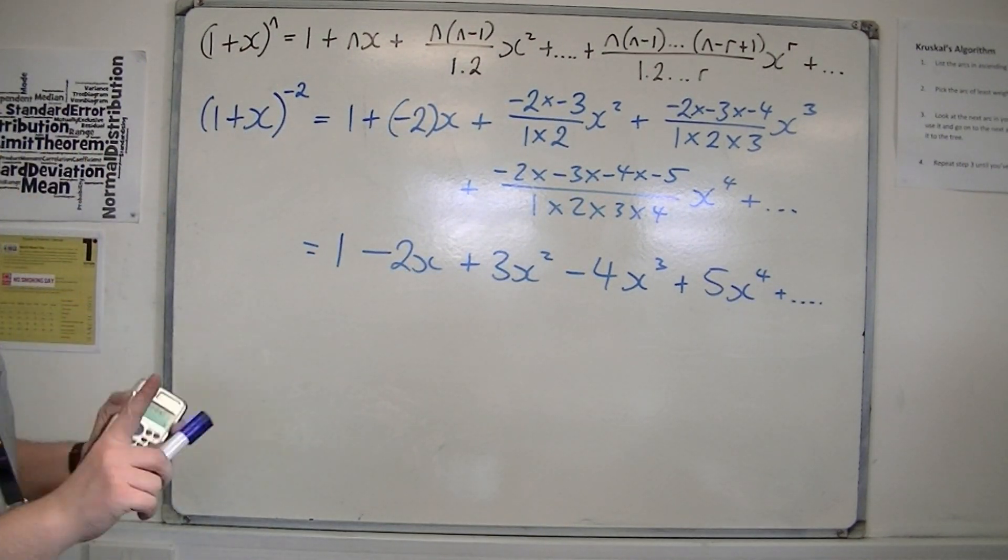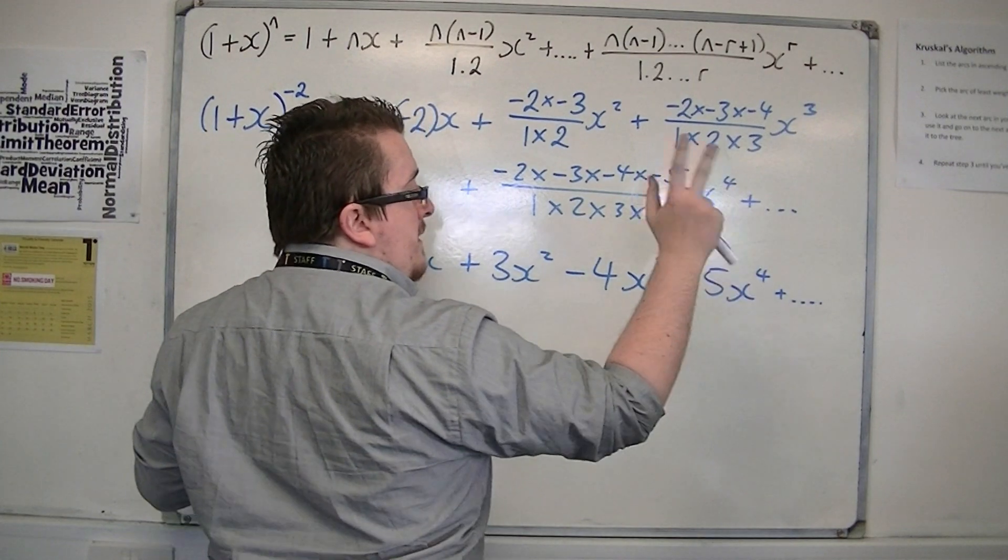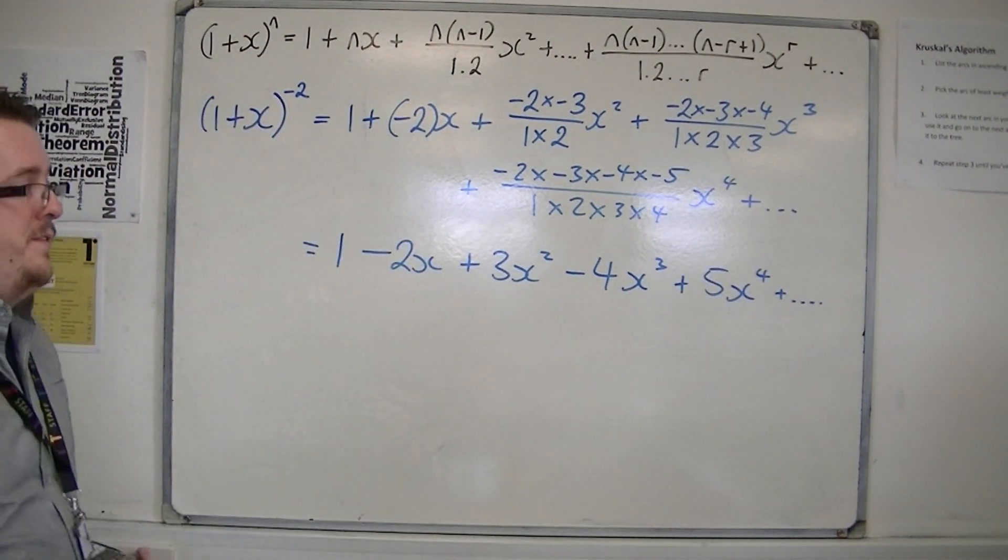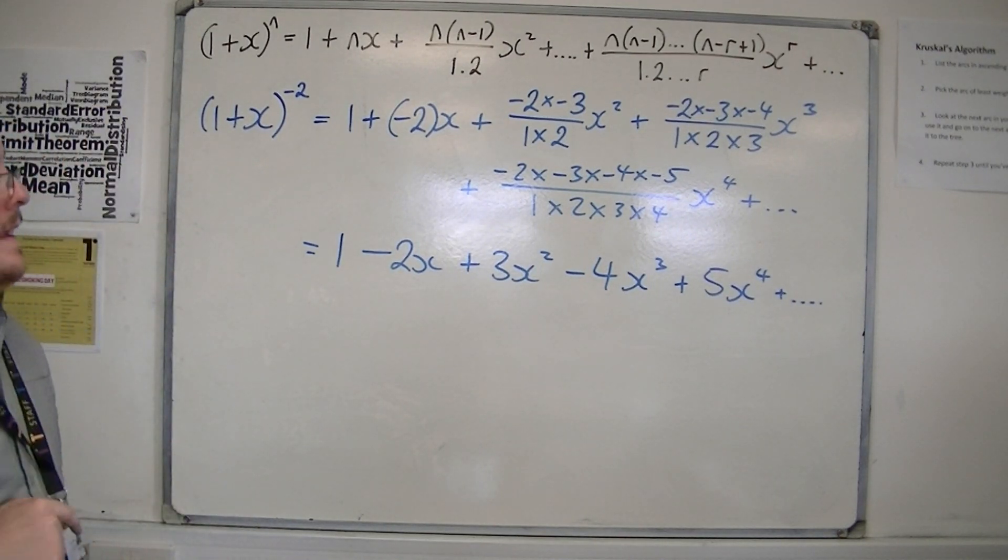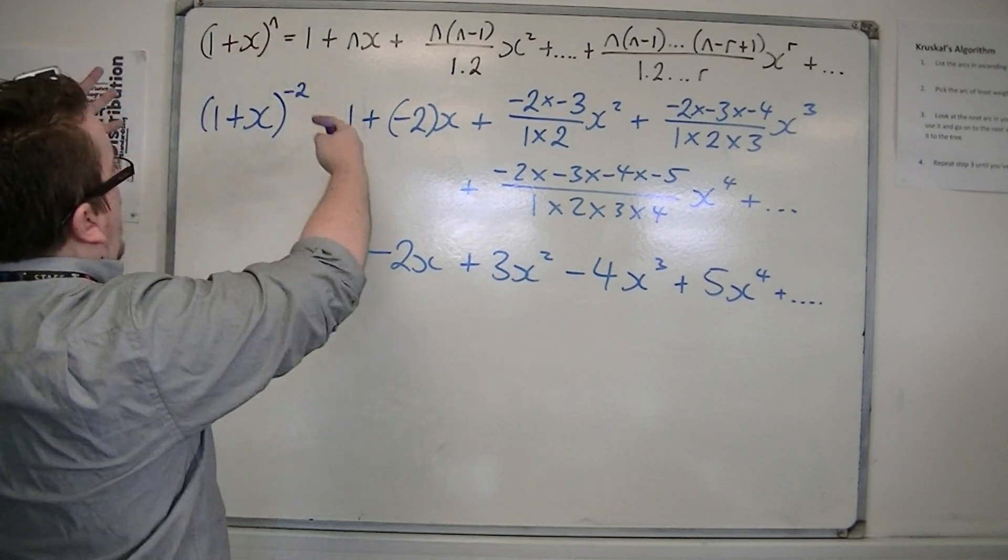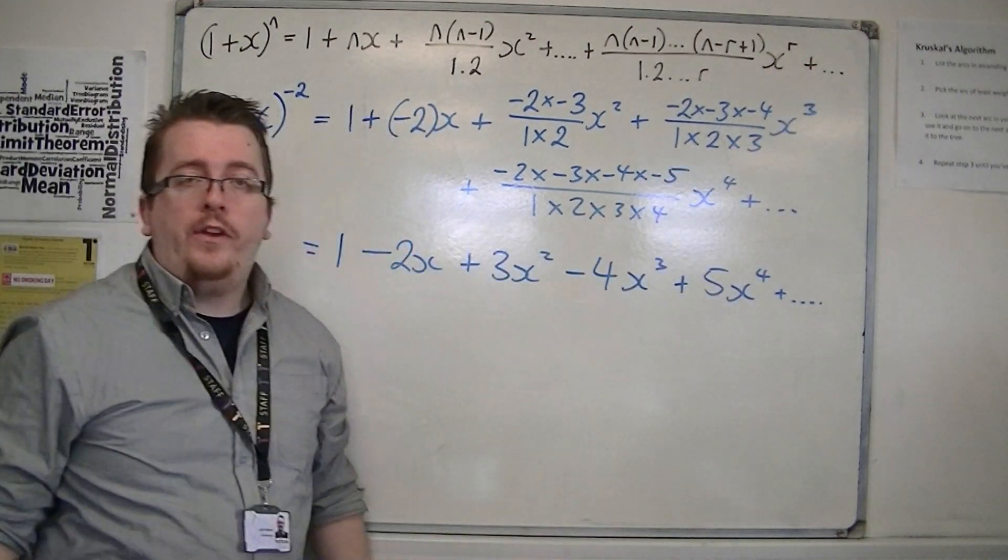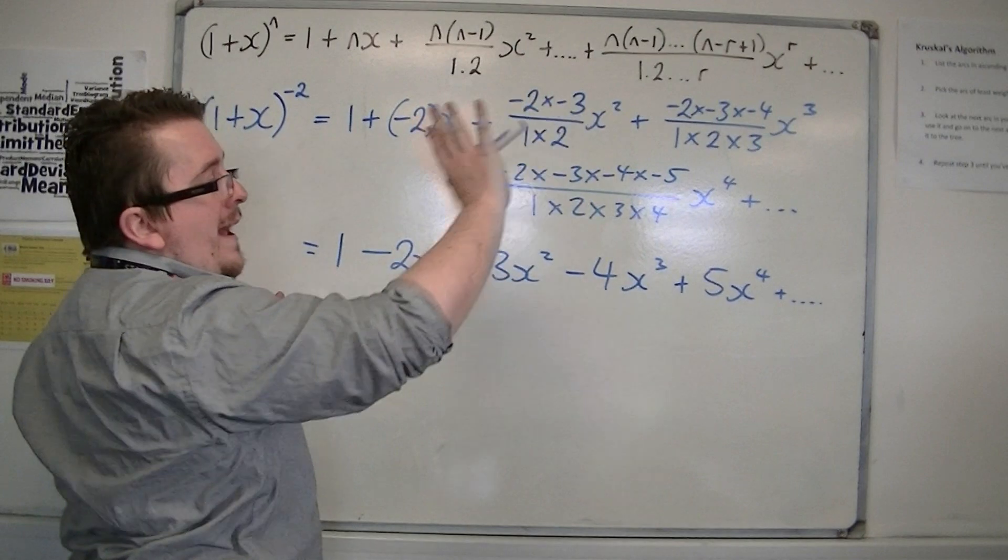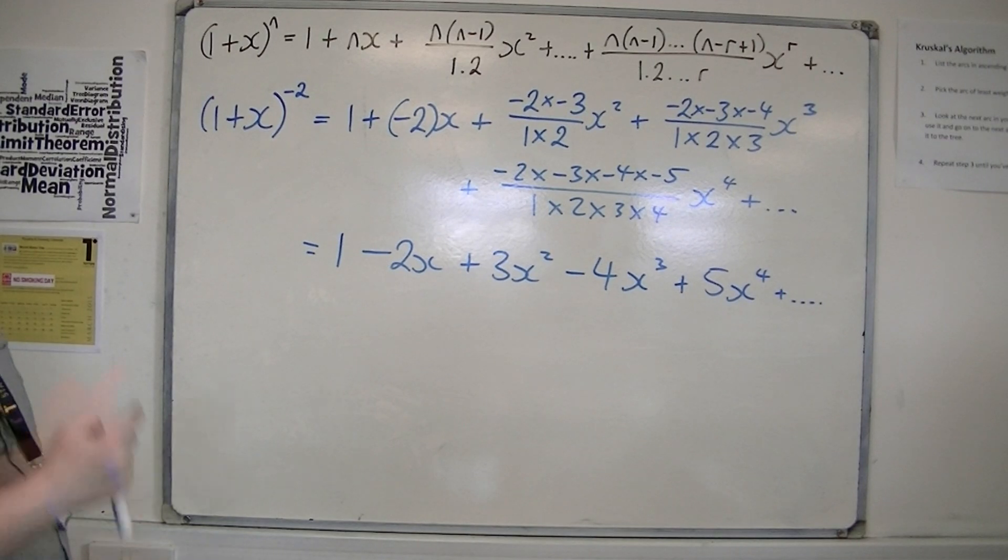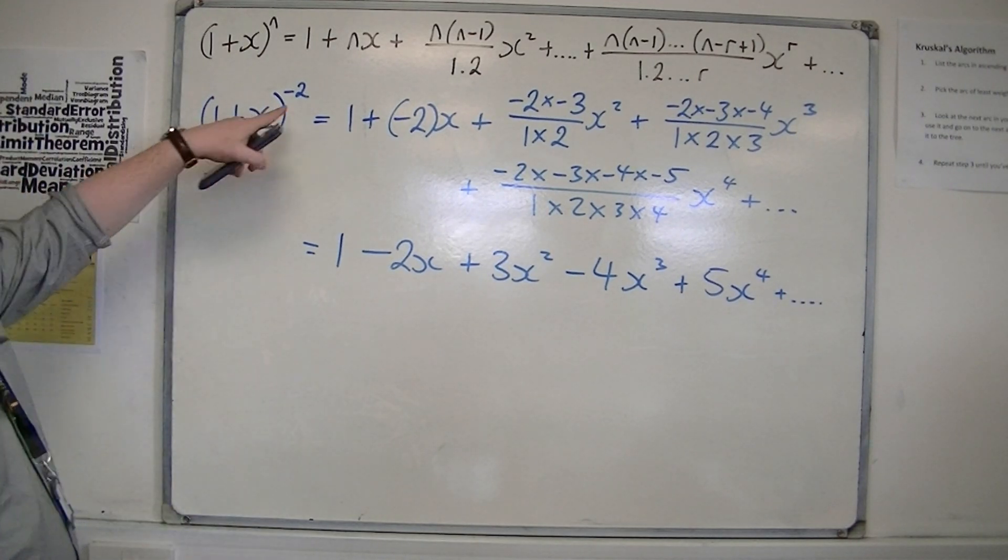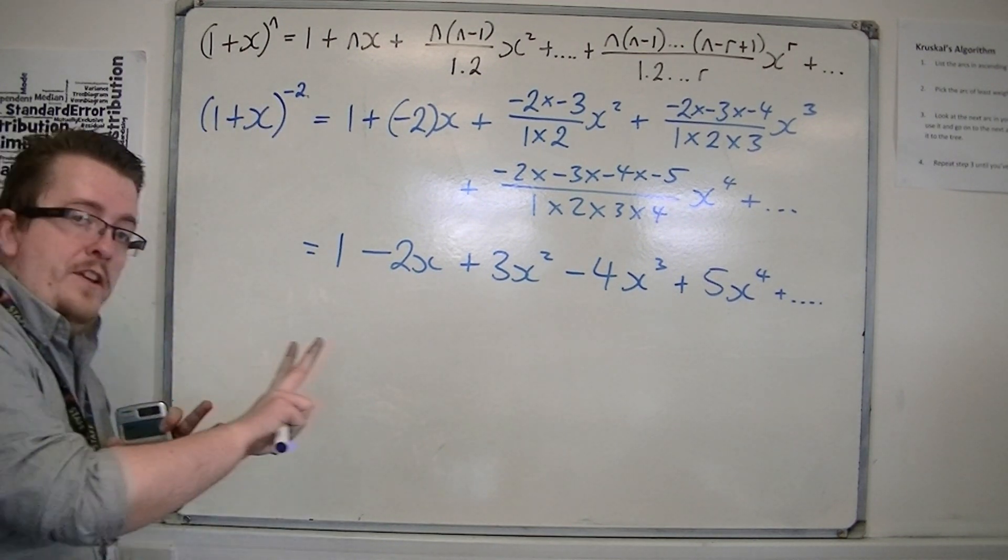So what happens here is that I've got 1 - 2x + 3x² - 4x³ + 5x⁴. The next term is -6x⁵, then +7x⁶, and so on. And what you see here is that I'm expanding a bracket here with a power of -2, and I get an infinite number of terms. It goes on and on and on forever. So if you expand a bracket that has a non-integer as its power, then what you have is an infinite series.